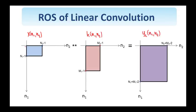Then, if the support of the first signal is N1 by N2, while the support of the second one is M1 by M2, then the result of their convolution is going to be, as shown here,